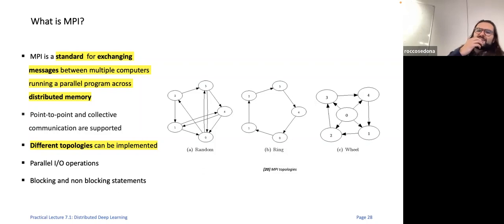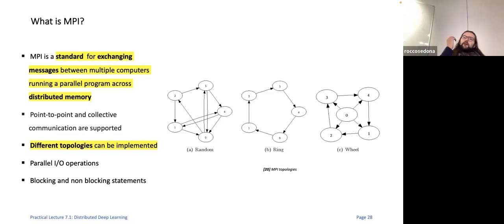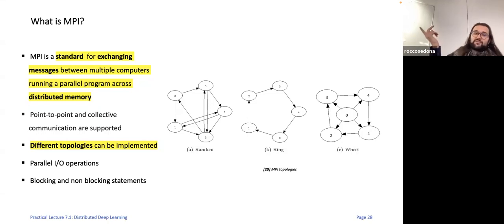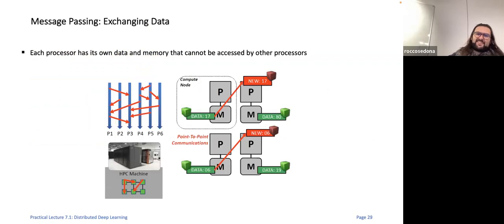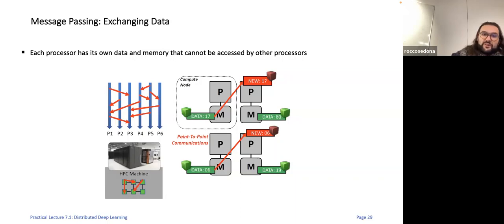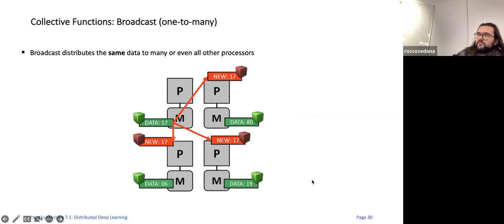In this figure I've put some classic examples like random connections or a wheel where there is a center, but most importantly for us is the ring — the ring-allreduce — which is the one in the center. This topology is very important for distributed deep learning. MPI is much more than what I'm describing now, but what we are interested in today is some of the basic operations you can perform — like exchanging messages point-to-point, or for example you can send an array from one processor to all the others, which is the broadcast operation.